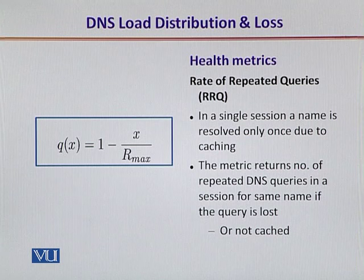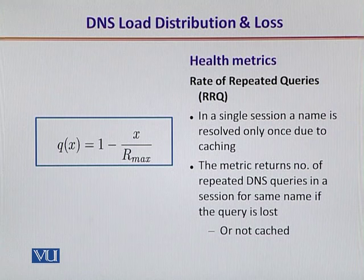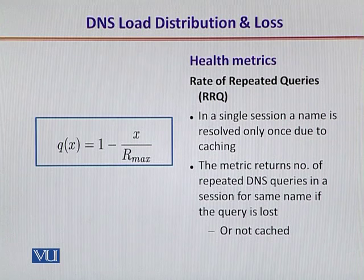Finally, the rate at which repeated queries are sent gives us insight that perhaps the same query is being sent for the same URL because there is some kind of loss in name resolution, or it is not being well cached by the DNS caching system. It is again represented by the expression given before you.